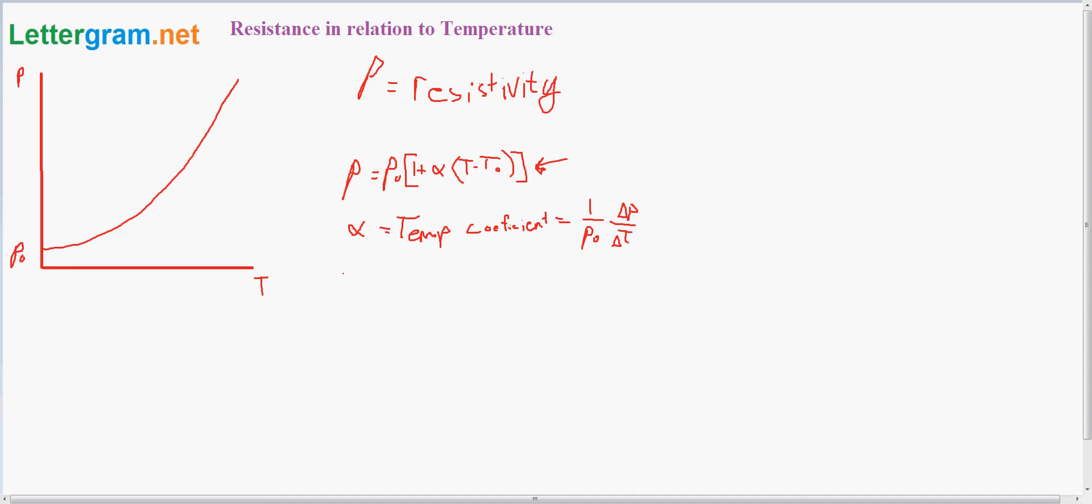And the way this relates to resistance is R = R initial, essentially, times one plus the coefficient temperature minus temperature initial.